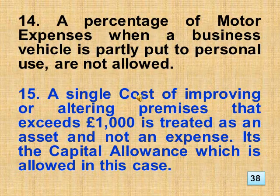12. Entertainment expenses are only allowed if the amount is below £50 per person per year. 13. Wages paid to a sole trader, their taxes, national insurance contributions, pension, and drawings are not allowed. 14. A percentage of motor expenses when a business vehicle is partly put to personal use are not allowed. 15. A single cost of improving or altering premises that exceeds £1,000 is treated as an asset and not an expense — it's the capital allowance which is allowed in this case.